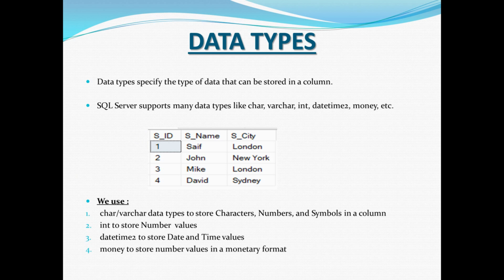The Student Name and Student City columns contain character values — names and places. For these we use the char or varchar data type, which can accommodate all character values including letters, numbers, and symbols. This is the use of data types: they specify the type of data that can be stored in a column.